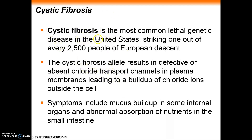Let's take a look at another genetic disorder: cystic fibrosis, which is a lethal disorder. In people of European descent, it affects about one out of every 2,500 people. This particular disorder is all about a chloride transport channel — it's a protein in the plasma membrane that transports chloride. Cystic fibrosis is a dysfunctional version of this.